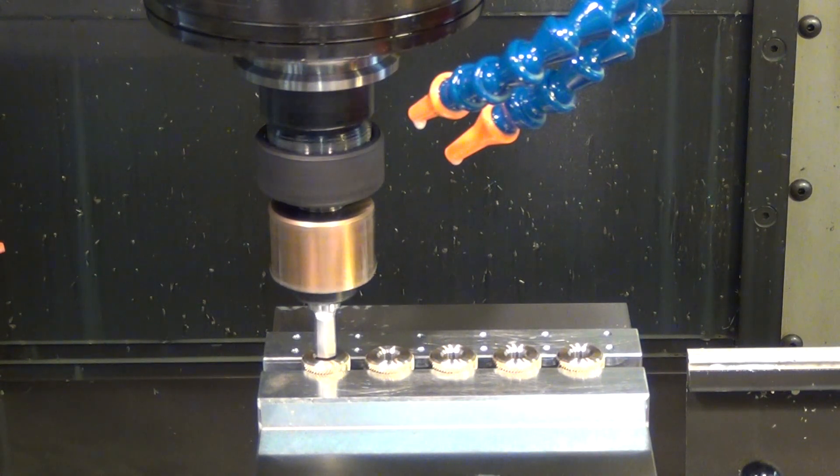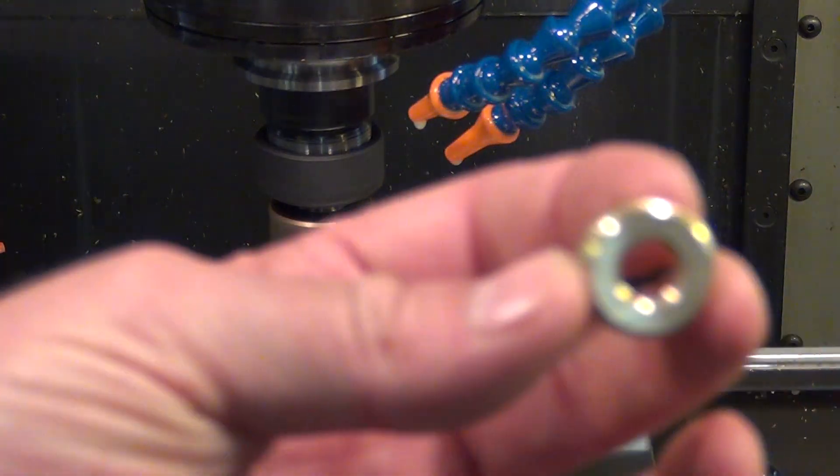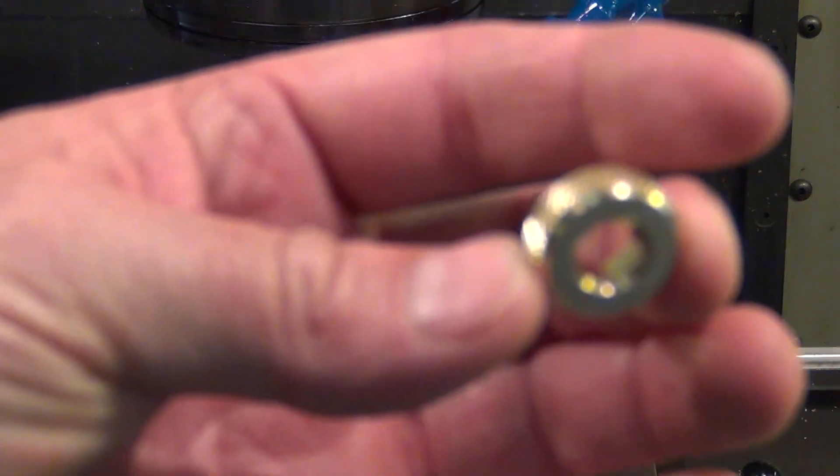Alright, we're going to show how to rotary broach. Here's an example of what the hole looks like.